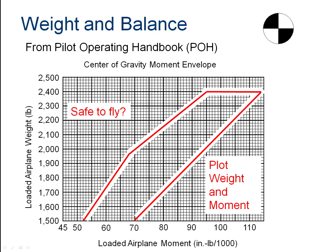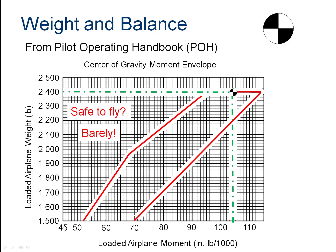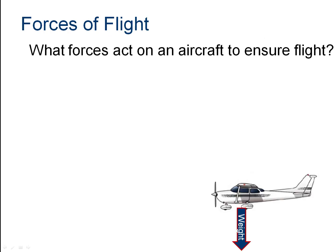Looking at where we are on the chart: at 2,400 pounds and about 104,500 inch-pounds, we are right on the edge of the controlled flight envelope. Our next topic will cover the forces of flight in more detail. We'll open the center of gravity calculations spreadsheet and take a look — so let's pause and download the center of gravity calculations.